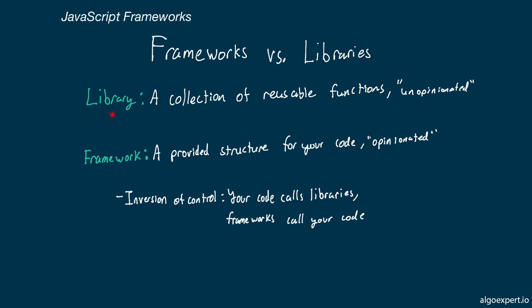A library is simply a collection of reusable code, usually in the form of functions, and these are what we call unopinionated. The library does not care how you use the functions, it doesn't care where you use them, and the functions should essentially work anywhere in your code. A framework, on the other hand, is a provided structure for your code, and it is more opinionated than a library.